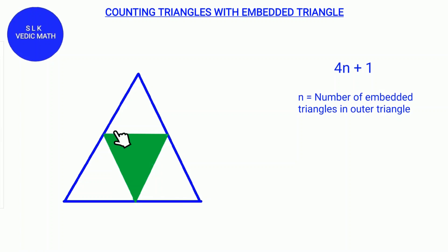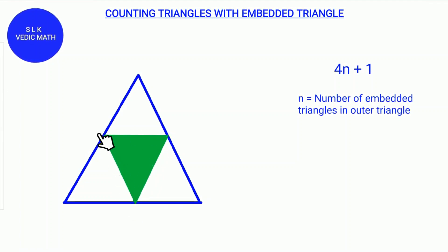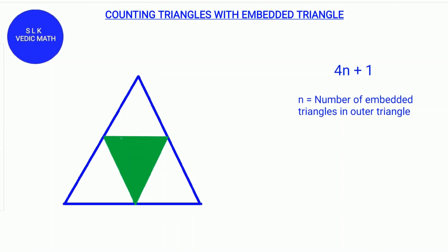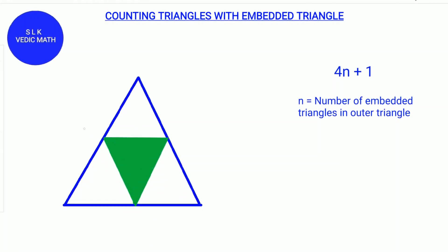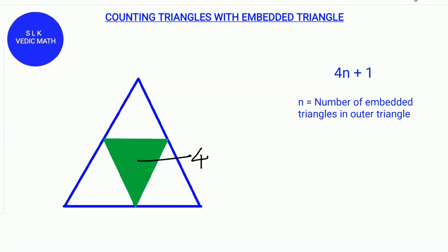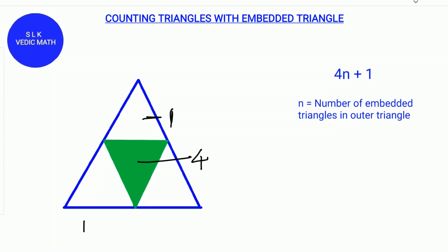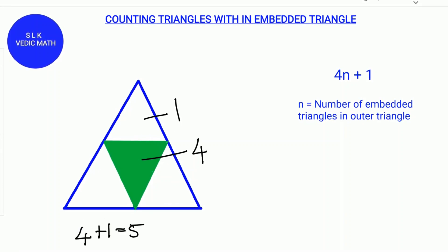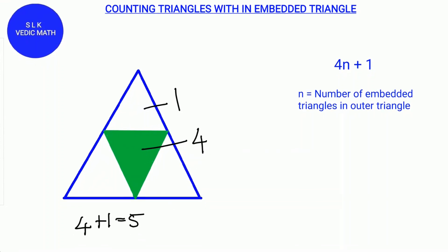In this figure there is one Embedded Triangle. This Embedded Triangle has four triangles: one triangle, second triangle, third triangle, and this is the fourth triangle. And this big triangle counts as one triangle. So we add 1 plus 4 together which makes 5. There are 5 triangles in this figure.